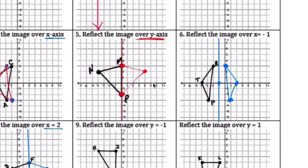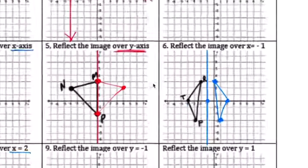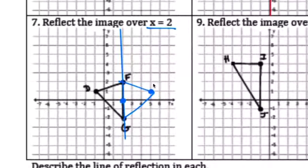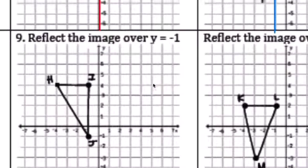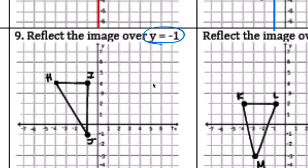Five, six, okay, and seven, it's like this. Eight, reflect over y=-1, graphing y=-1.